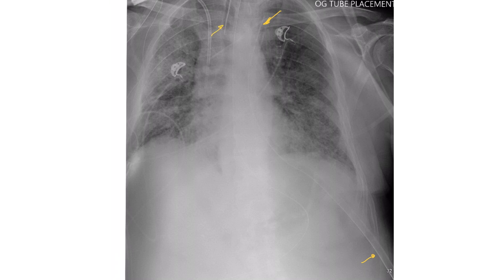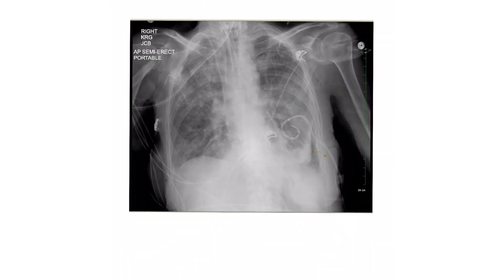The ET tube and NG tube are still in good position — actually it looks like a post-pyloric position, which means the risk of aspiration is even less. There is a new catheter visible now; it looks like a dialysis catheter because it's large bore and appears in good position. This also looks like a large-bore pleural drain — a pigtail catheter — rather than a regular chest tube, though we call it a chest tube because it's the same principle.